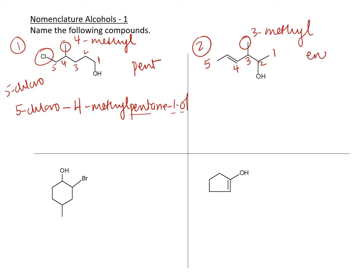We have an ene and we have an ol. The ene is going to be at the 4, the ol is going to be at 2, and we have the 3-methyl. The name of this compound will be 3-methyl-pent. Now with the pent, we have to do the alkene first: pent-4-ene-2-ol. We do the ol afterwards because alcohol takes priority.